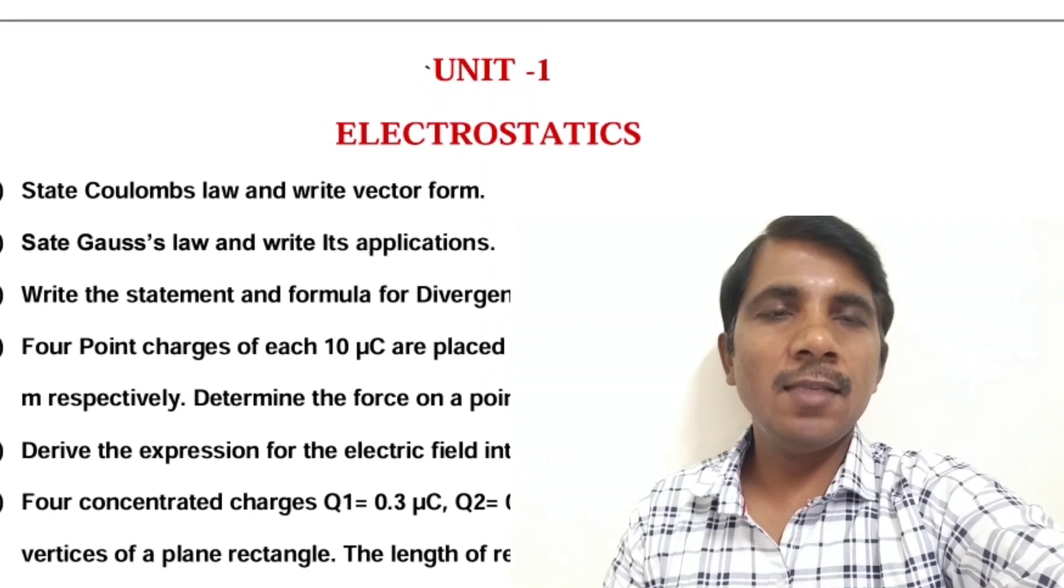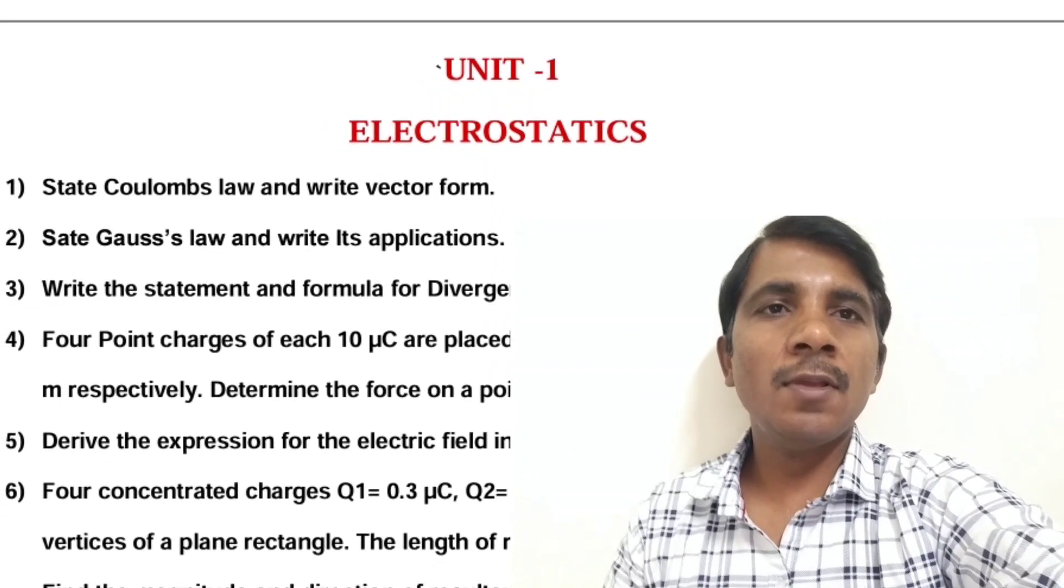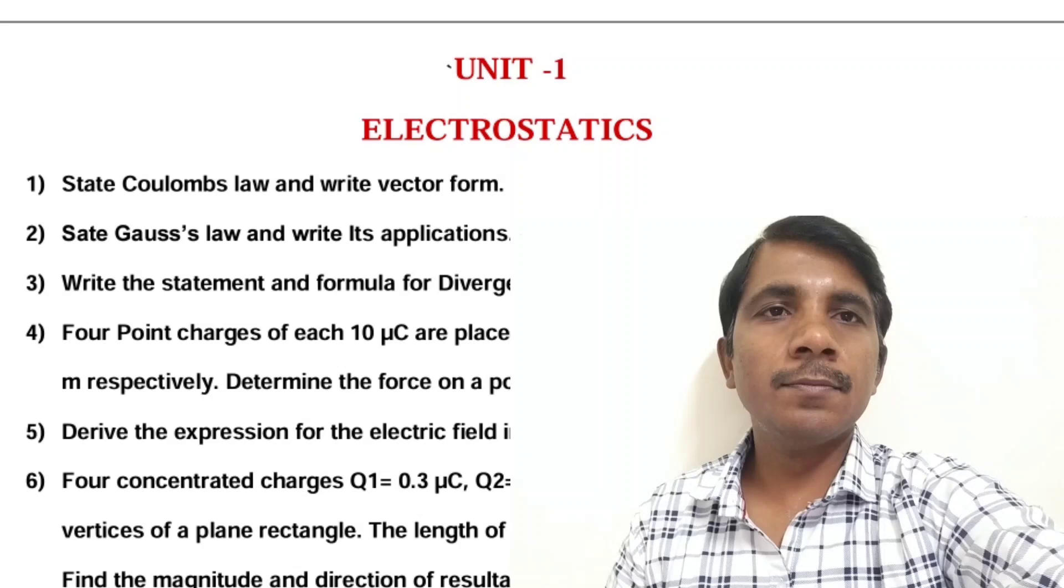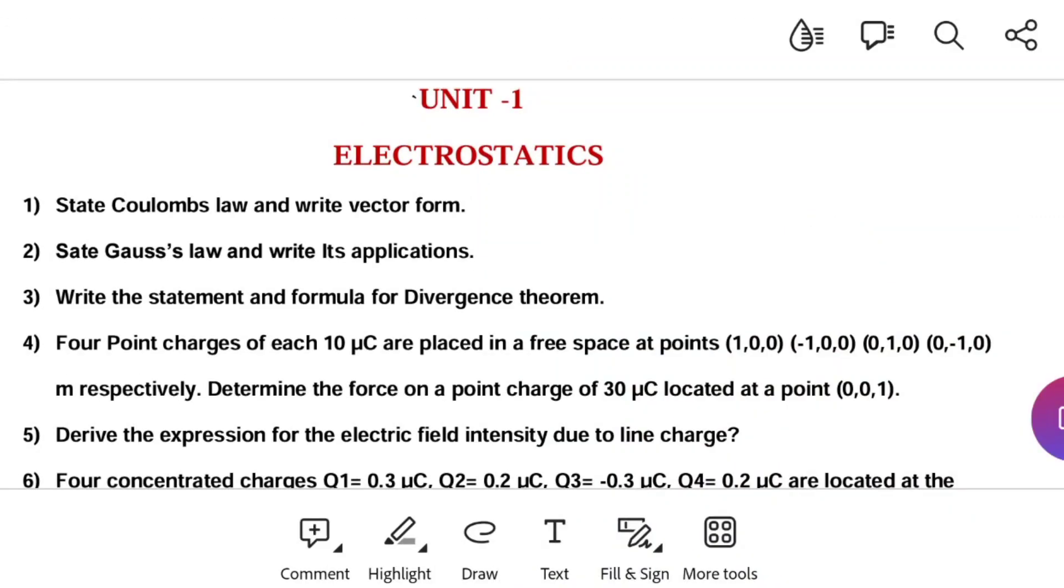Let us see the important questions on electromagnetic field theory coming to Unit 1 Electrostatics. The ultimate question is state Coulomb's law and write vector form. Coulomb's law can be stated as the force between any two charges is directly proportional to product of their charges and inversely proportional to square of distance. The same thing we have to represent in vector form.